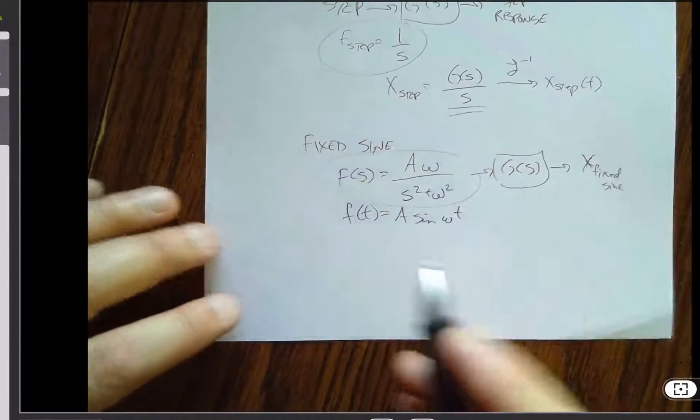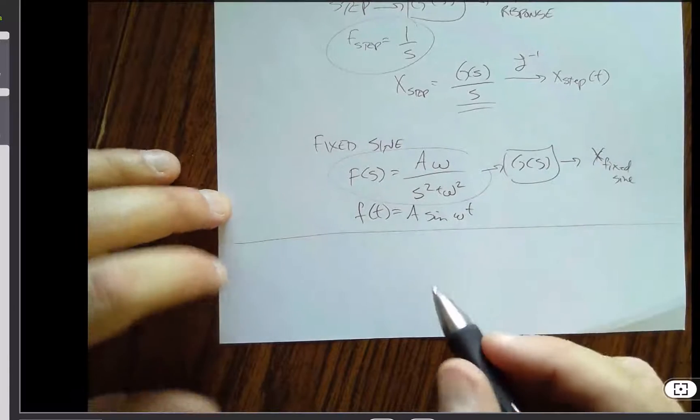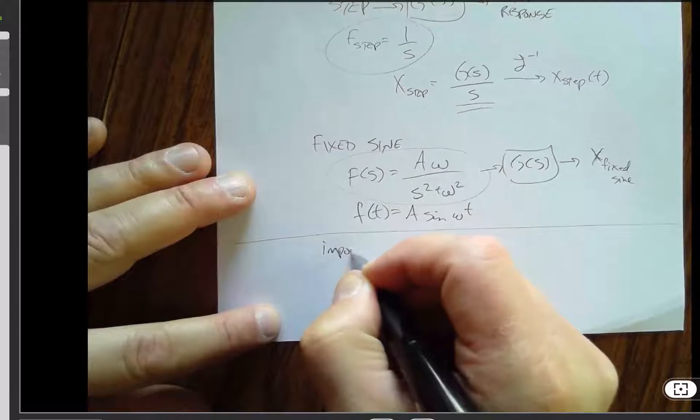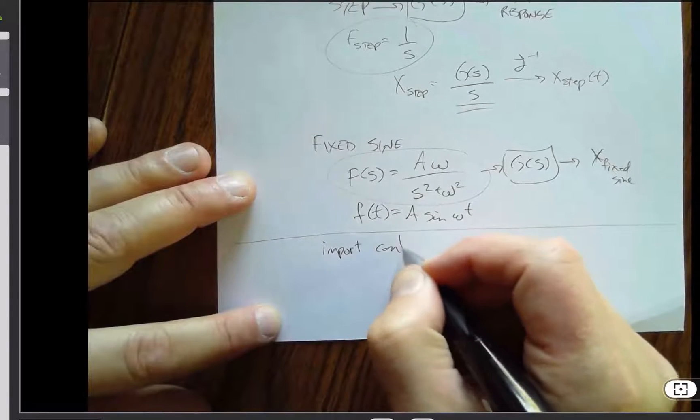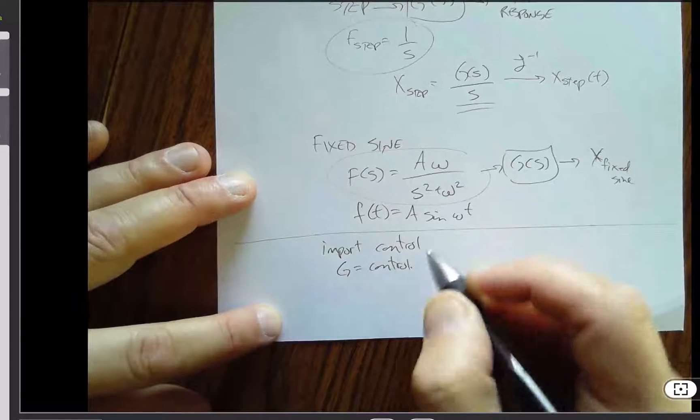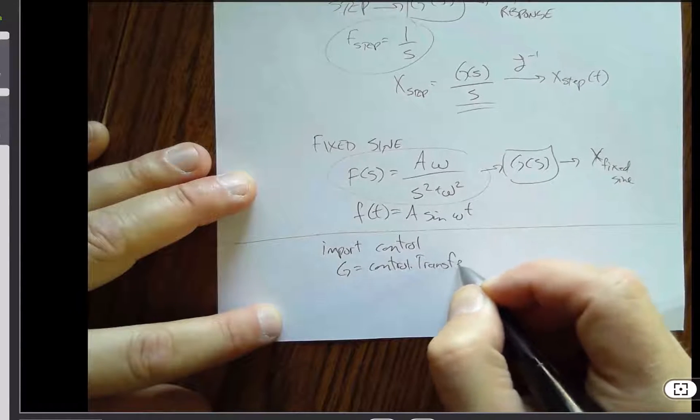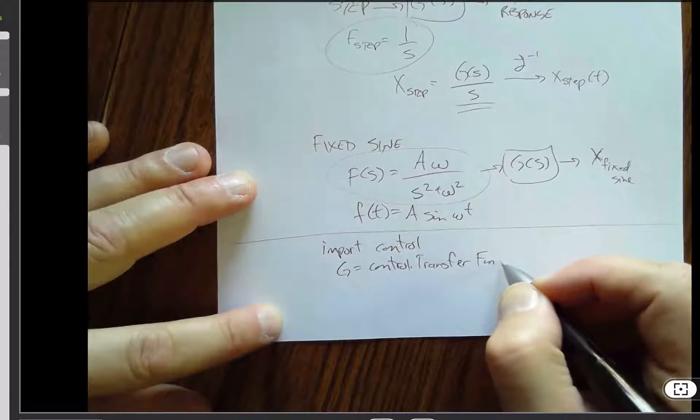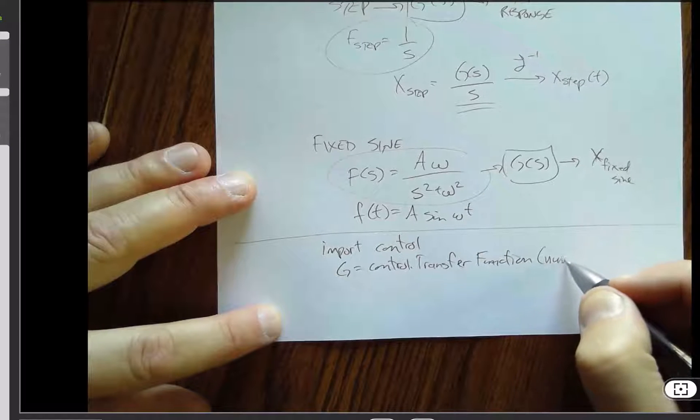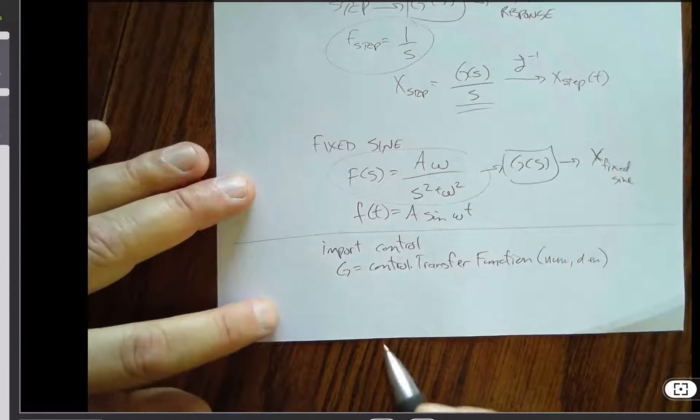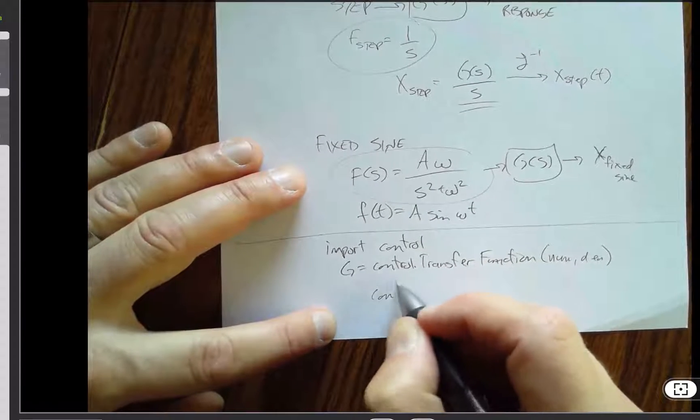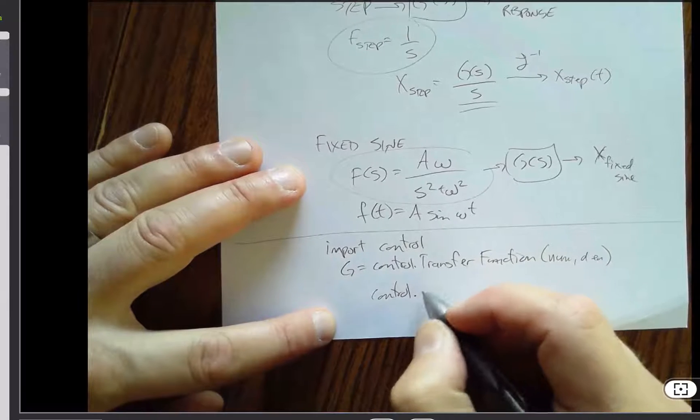But the other option that I want to make sure we talk about is to talk about how to do this numerically. And so if I have the control module, and I create g is equal to control.transfer function, and I'm writing this out for now, we'll use a computer in just a second, and I send in a numerator and denominator list of coefficients, I then have options, for example, control.impulse response.